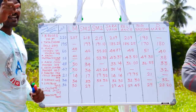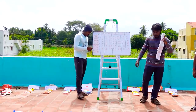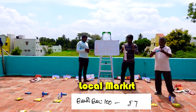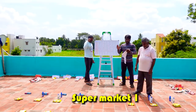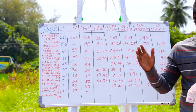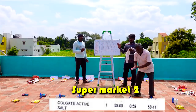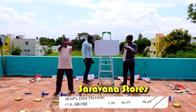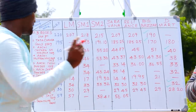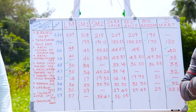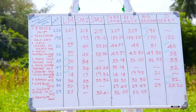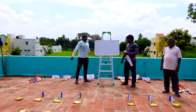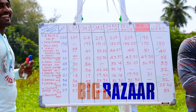Next, Colgate Active Salt is 100 grams. This MRP rate is 59. Local market is 57. Supermarket is 50. Supermarket is 58. Saravana Stores is 56. Reliance supermarket is 56. Big Bazaar is 55. D-Mart is 56. So this time the winner is Big Bazaar — they are about 4 rupees cheaper.